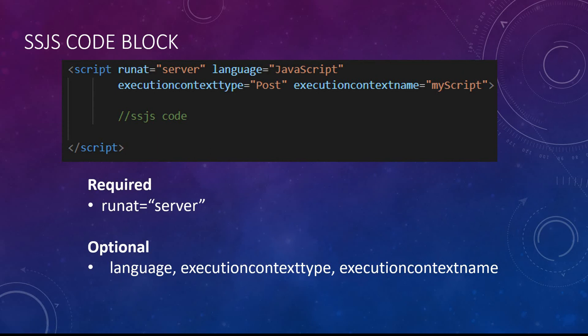There are three more optional parameters for the script block. One is language, where you can specify either JavaScript or Ampscript — the default is JavaScript, so you can omit it for SSJS. Then there is execution type context, which takes either get or post and refers to the HTTP request method — it defaults to get. Finally, execution context name sets a name for the script block; the block will only execute when the request context contains that name, which is useful for conditionally executing or excluding a block.